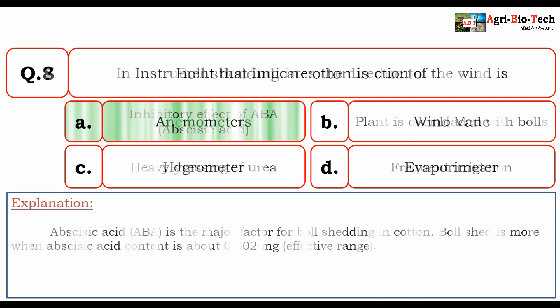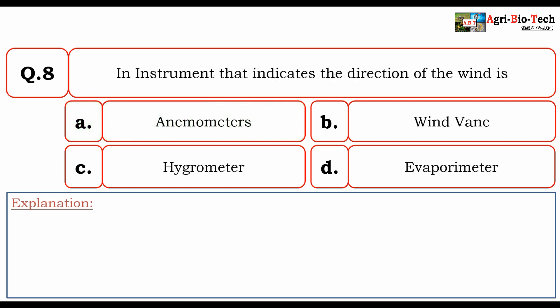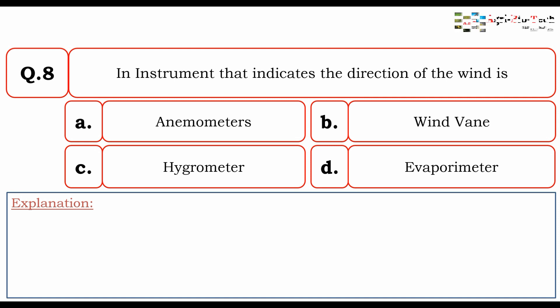Next question: An instrument that indicates the direction of the wind is? The given options are A. Anemometer, B. Wind vane, C. Hygrometer, and D. Evaporimeter.